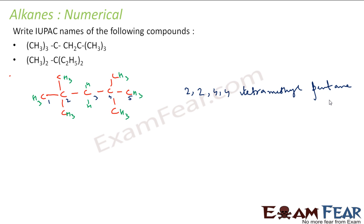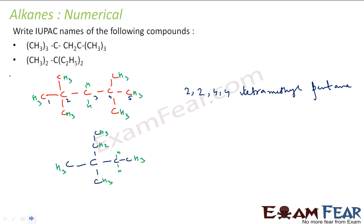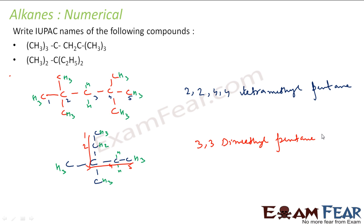The next compound is CH3 with C and C2H5 groups. I have 1 carbon with 2 methyl groups here, and 2 methyl groups on another carbon. The longest chain is 1, 2, 3, 4, 5 carbons — pentane. Whether I number from either end, I get methyl groups at the third position in both cases. So at position 3 I have 2 methyl groups — the name is 3,3-dimethylpentane.